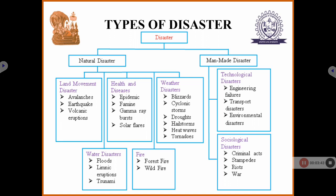Coming to manmade disasters — these occur due to human negligence. A recent example is the oil spill that took place in Russia. Manmade disasters happen when a person is not careful in doing their work. Sometimes they may affect a small group of people, and sometimes the impact is huge — when it is huge, we call it a disaster.